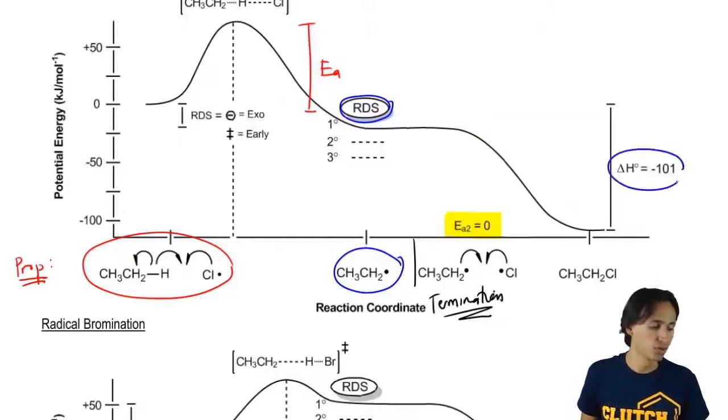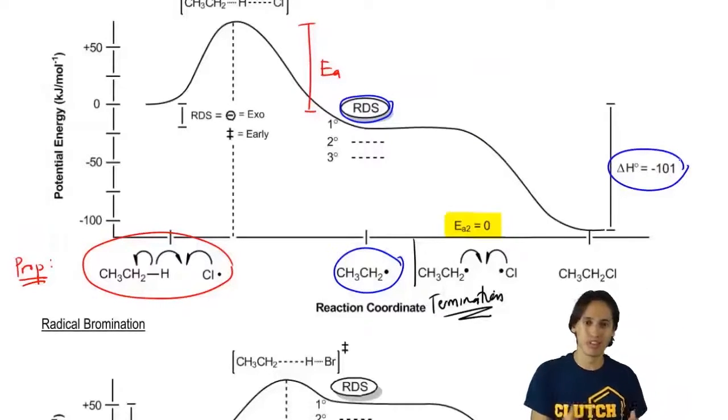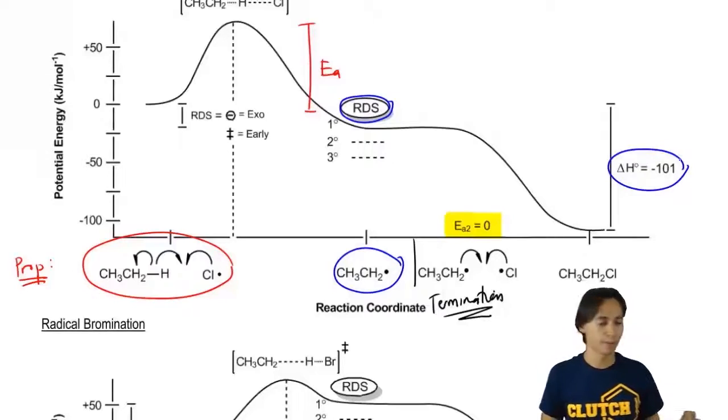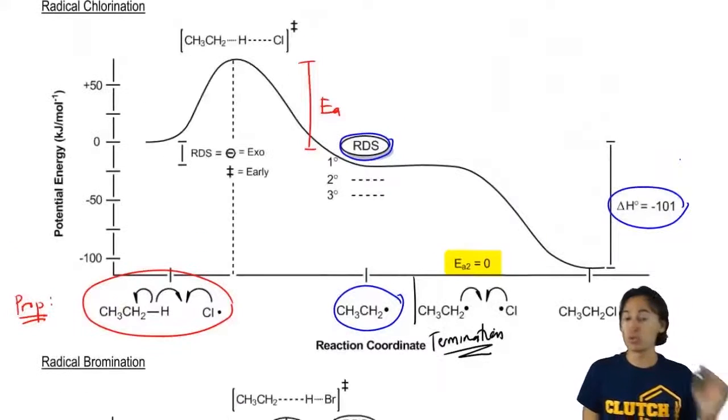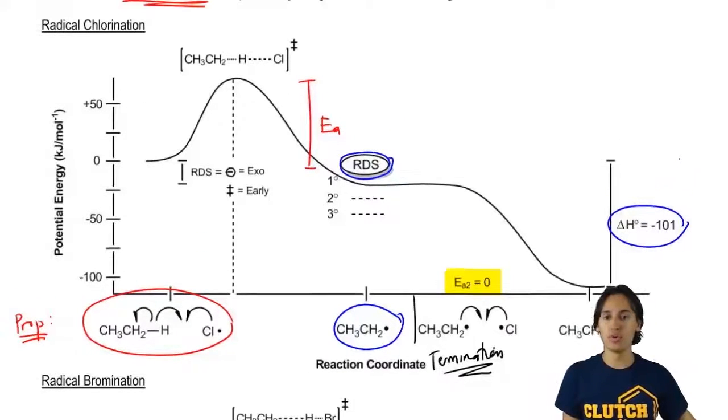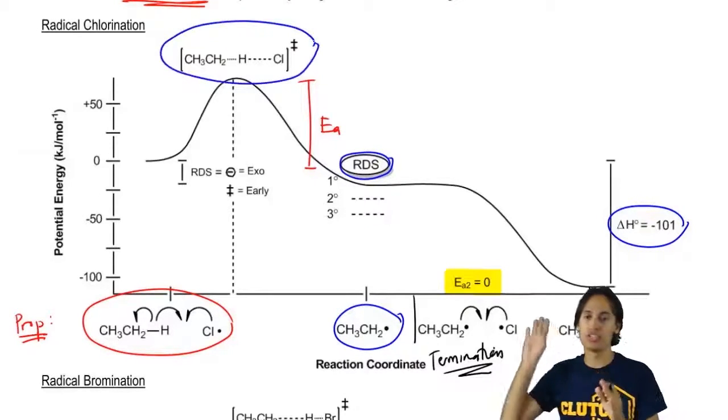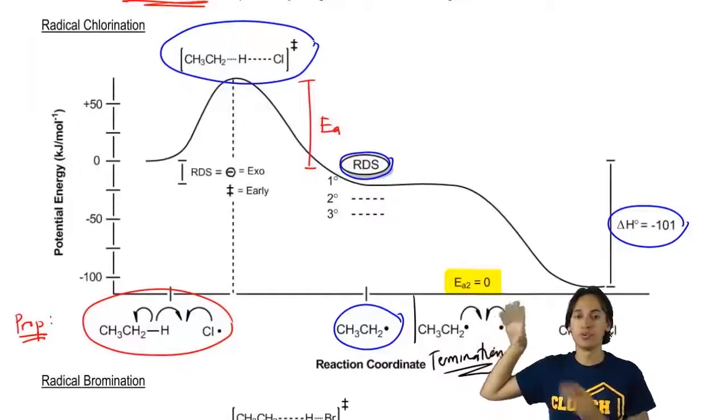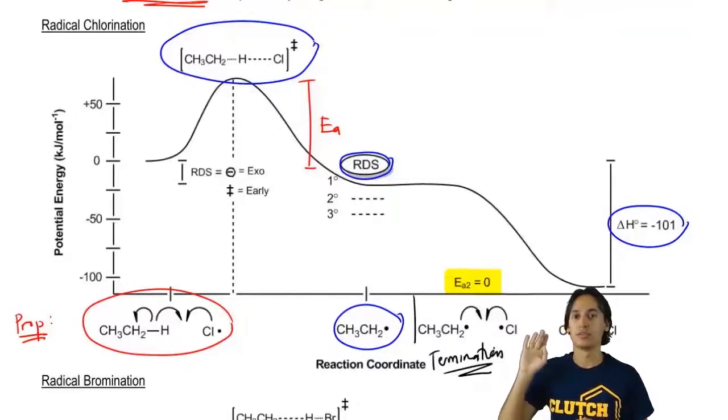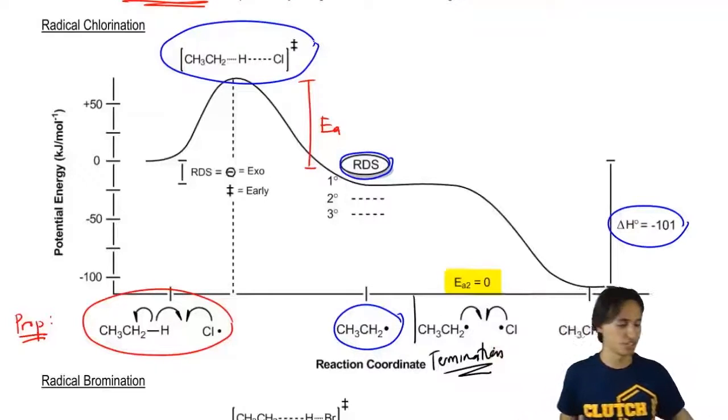Now notice here that my overall enthalpy at the end is ΔH° = -101 like I told you. But what's really important is what the transition state looks like. I'm not going to go through this just yet. Pay attention to what that transition state looks like, Hammond's postulate. Now we're going to look at bromination and see how bromination is different.